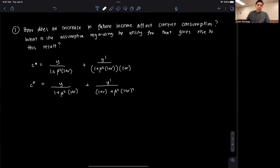So, the question is asking, how does an increase in future income affect the current consumption? And so, if we want to find that out, we have to take the derivative of C star with respect to y prime.